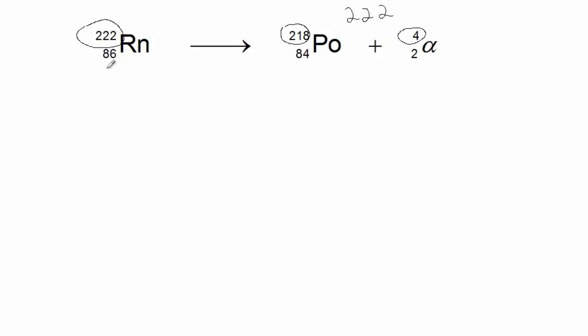Similarly, the sum of the subscripts on the left side, here is 86, must equal the sum of the subscripts on the right side, in this case 84 and 2, which is 86.